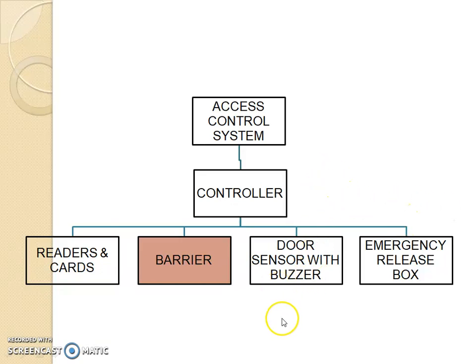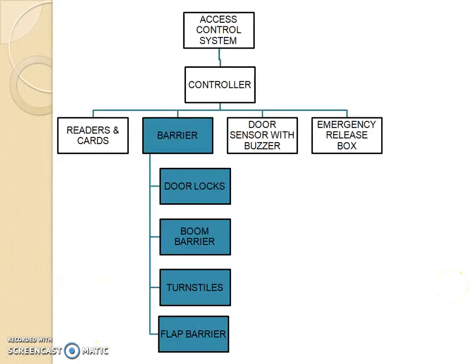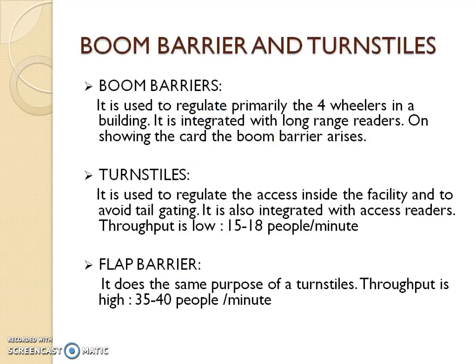Next in access control is barriers. A barrier system is a physical obstruction for people or vehicles, which is used for accessing or restricting access. To restrict access, there are door locks, boom barriers, door stones, plant barriers, etc. A boom barrier is a typical facility used for this purpose.